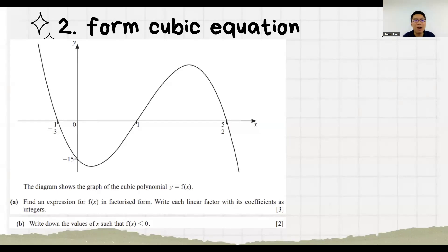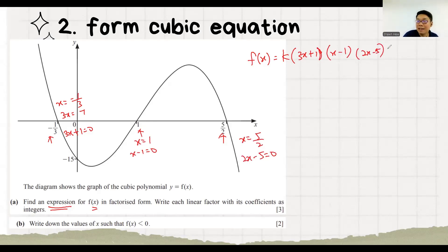Other than ask you to sketch the graph, they can give you the graph and ask you to find the expression for this fx. Then we have a number here. We're not very sure. We do it later. We use these three to form the three brackets first. X equals to minus 1 over 3. So 3x equals to minus 1. 3x plus 1 equals 0. So like this, we can gain 1 mark.